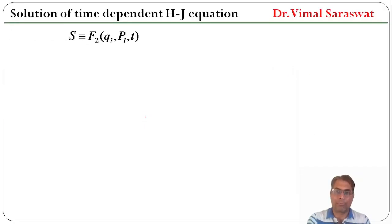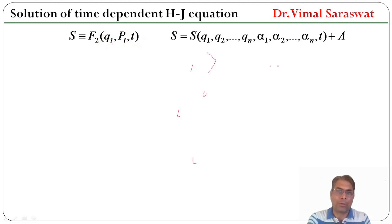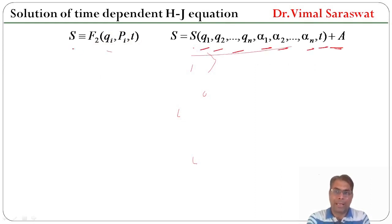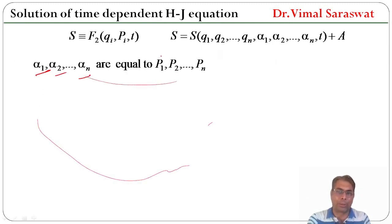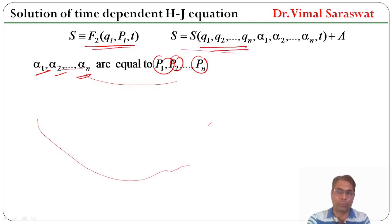S is equal to F2, and F2 is the generating function, which is a function of old coordinates, new momenta, and time. Also, S equals S plus a, and S is a function of q1, q2, ..., qn, alpha1, alpha2, ..., alpha_n, and t. So if we compare these two equations, it is clear that alpha1, alpha2, ..., alpha_n are equal to p1, p2, ..., pn.